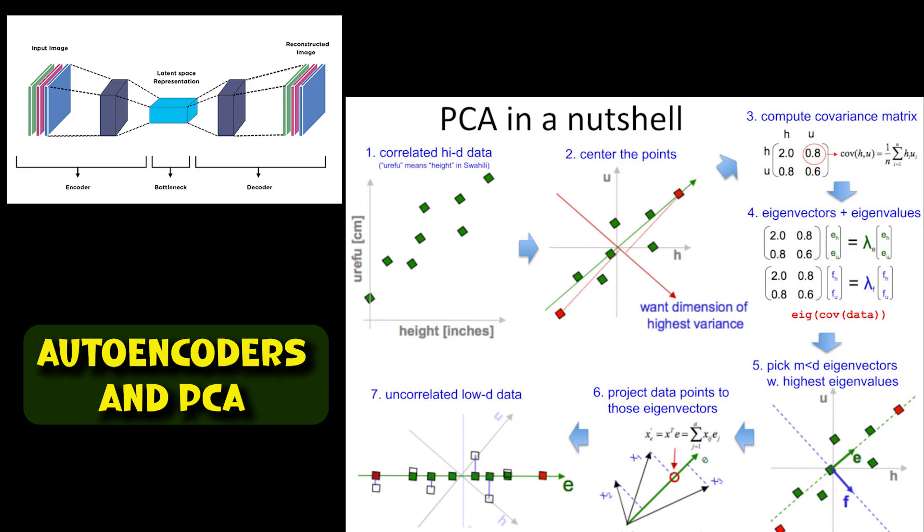So, the steps involved in PCA are: First, standardize the dataset, that is mean centering and scaling. Then, calculate covariance matrix. Then, compute the eigenvectors and eigenvalues of the covariance matrix. Then, select the top K eigenvectors with highest eigenvalues where K is the desired reduced dimension. And finally, project the original dataset onto these selected eigenvectors.